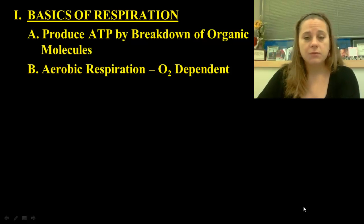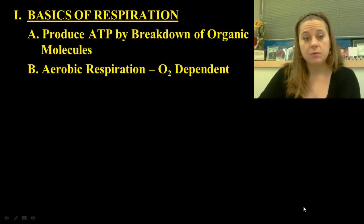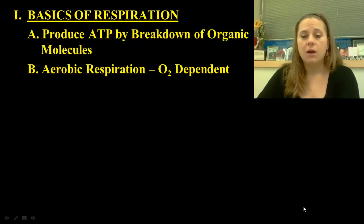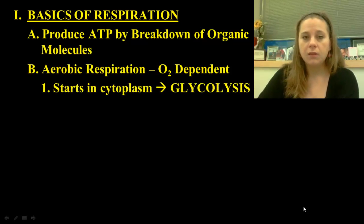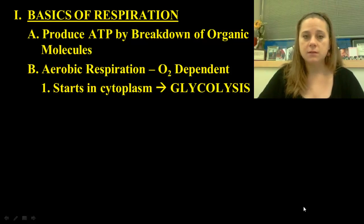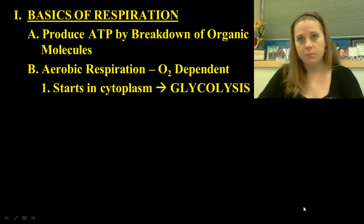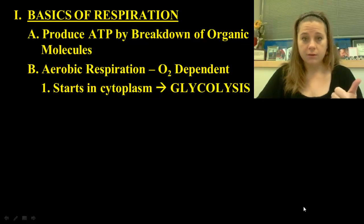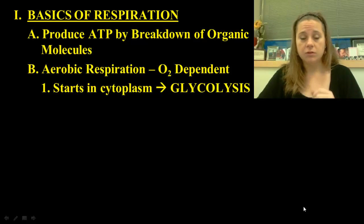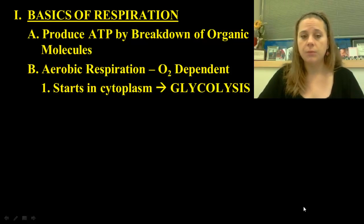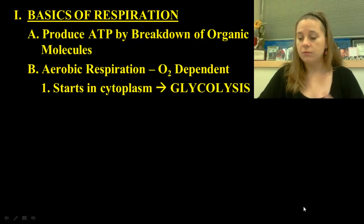Aerobic respiration is a process that is absolutely 100% oxygen dependent — this is the key difference between aerobic versus anaerobic. The whole process of releasing energy from an organic molecule begins in the cytoplasm of the cell. In aerobic respiration there are three steps: glycolysis, the Krebs cycle, and then the electron transport chain. These three steps are vital to building up that cache of ATP that we need.